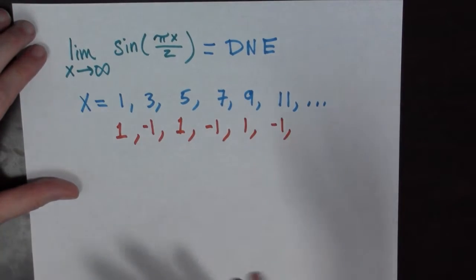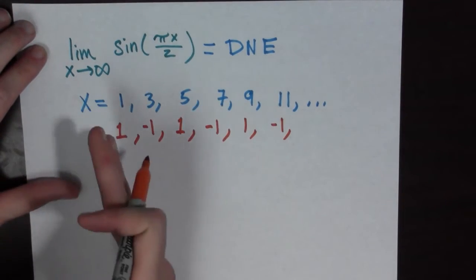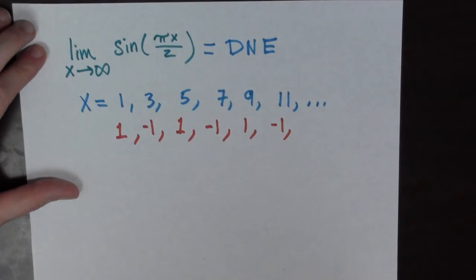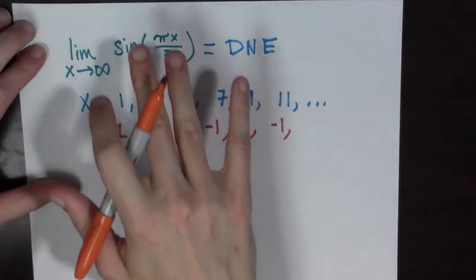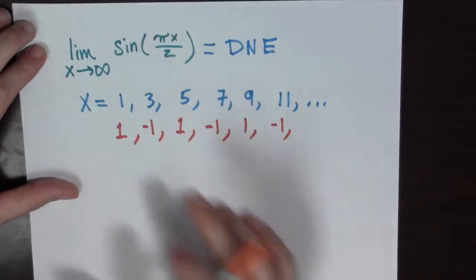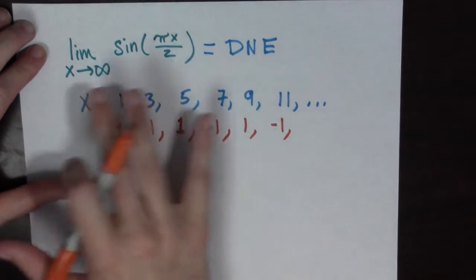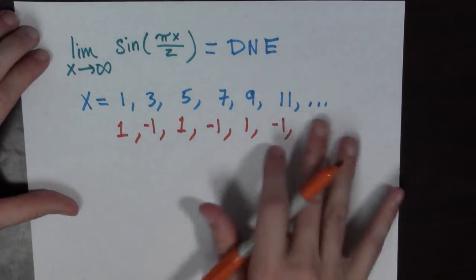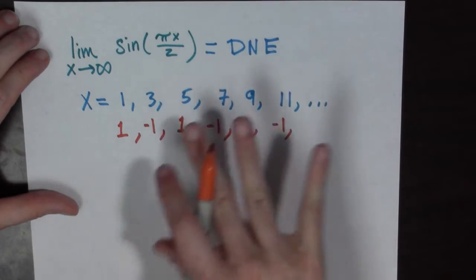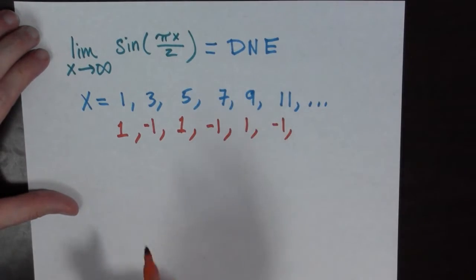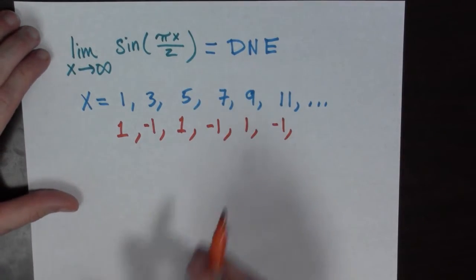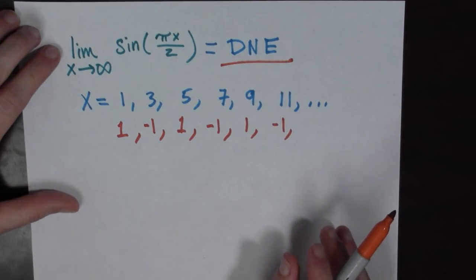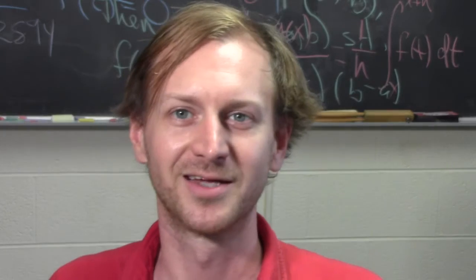It doesn't really matter how large x gets. For this limit to exist, the value of this function needs to settle down as x becomes very large. As we can see, it is not settling down at all — it is oscillating between 1 and negative 1. So the limit does not exist. Done!